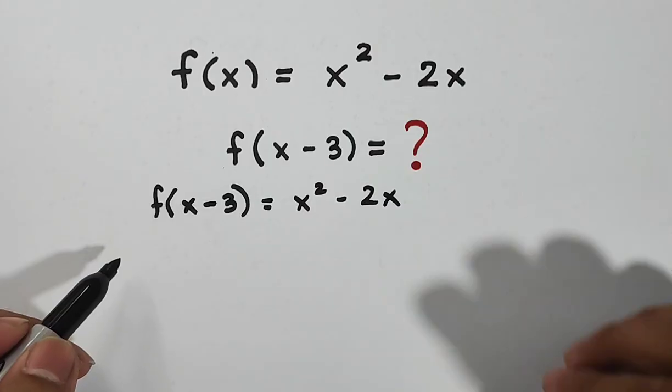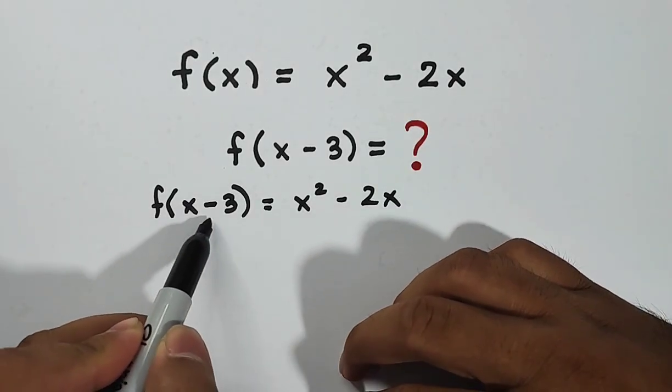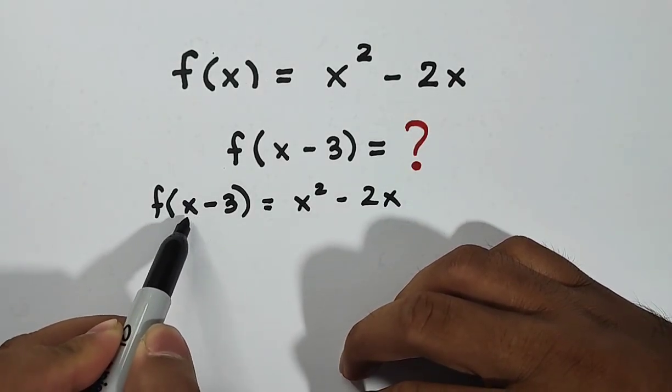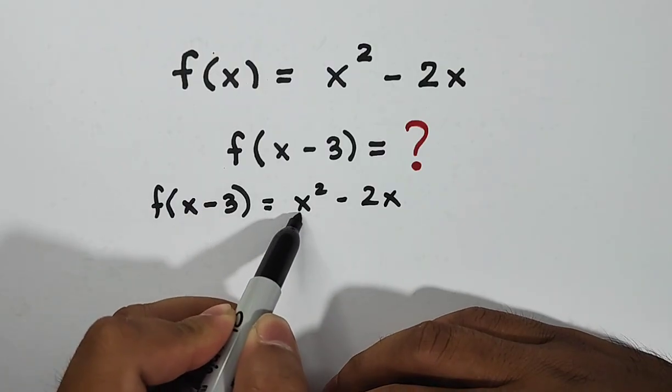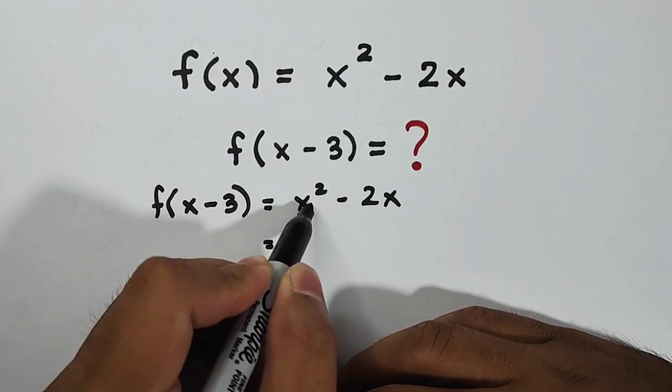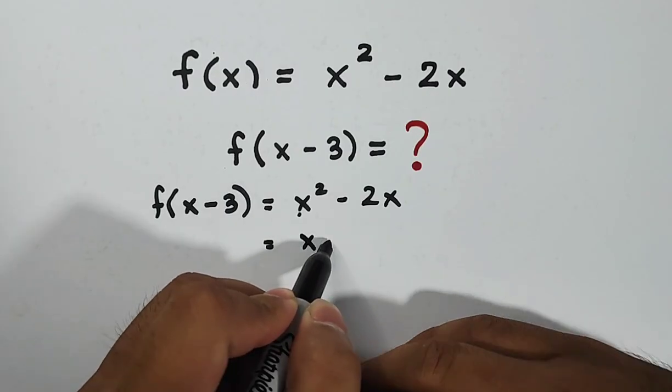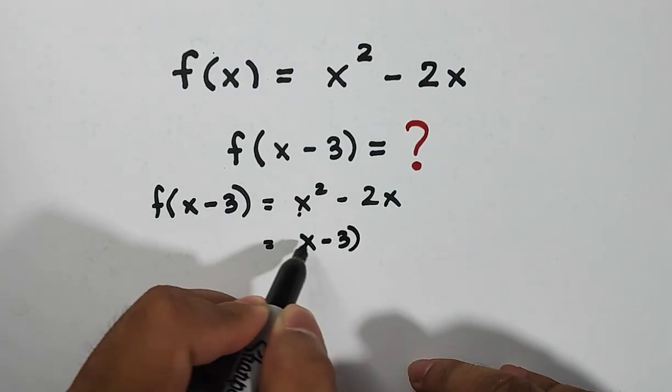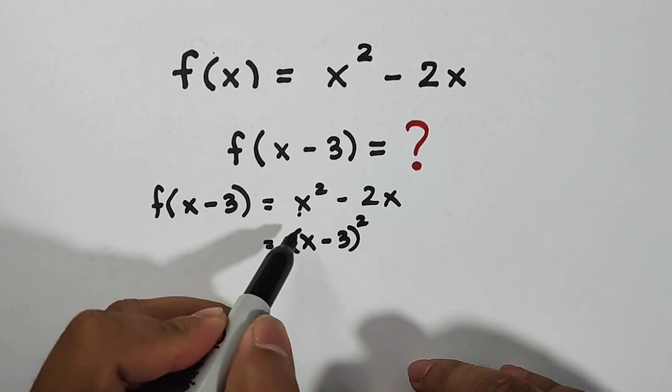As I told you earlier, this x minus 3 will replace the variable x here. So it will become your x squared will become (x - 3) squared.